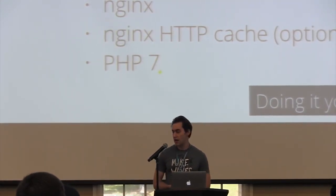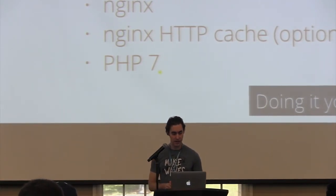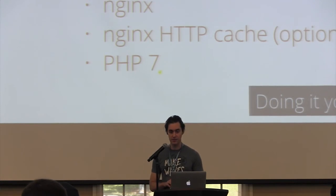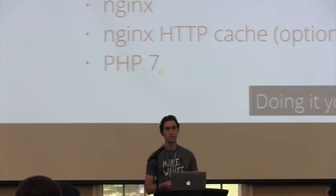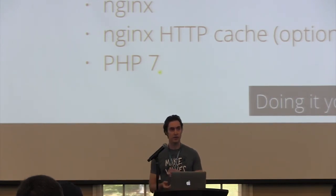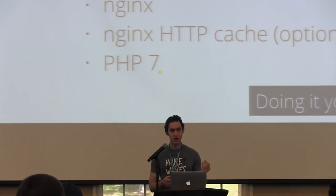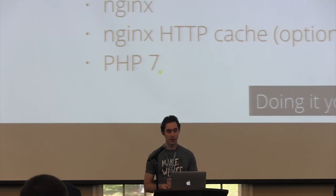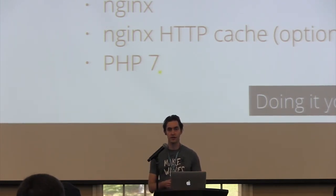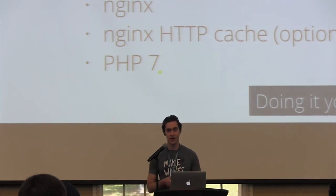The third option is Trellis, made by the Roots team. It comes with MariaDB, Memcache, and Nginx. You can also have Nginx do the HTTP caching, and it uses PHP 7. The only caveat is that Trellis is coupled with the Bedrock project — Bedrock is the Roots team's project framework for building WordPress applications using the 12-factor app philosophy — so you can't use Trellis without your project using Bedrock.